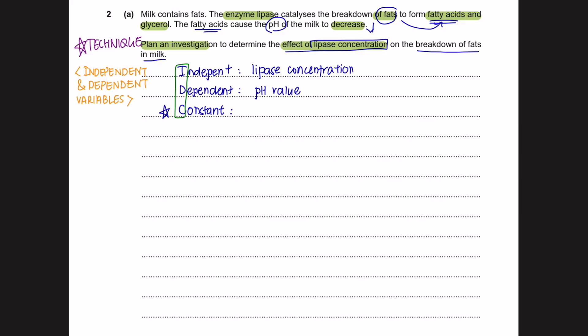So we are going to measure the pH value in this experiment. And always remember that you must have a constant variable in order to keep the experiment fair. We should be using the same volume of milk, the same volume of lipase, and ensure that the temperature of milk is the same.